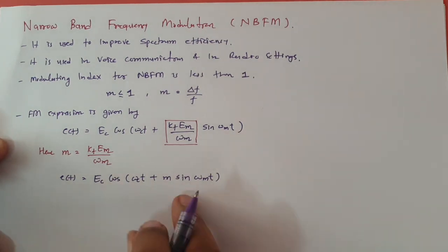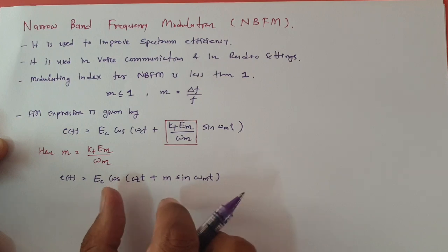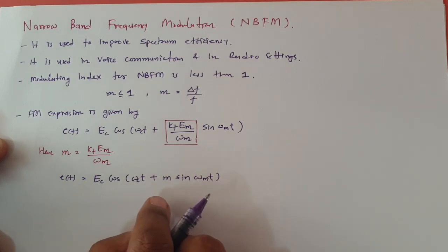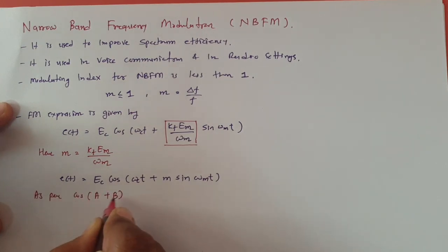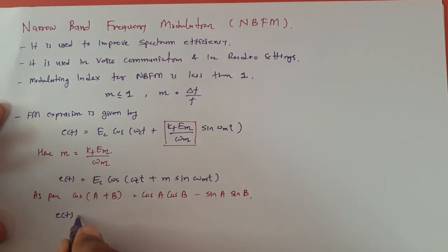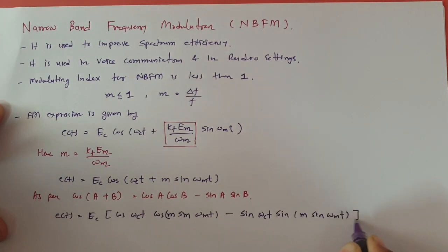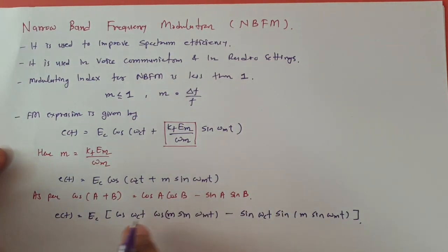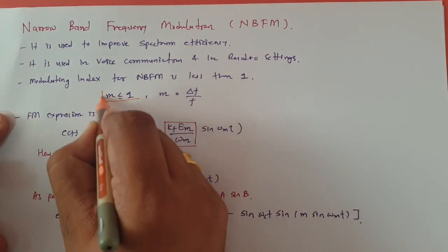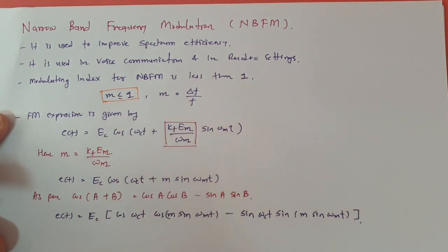Our basic agenda is to re-elaborate this equation. What we will be doing is rewriting this equation using the identity cos(A + B) = cos A cos B − sin A sin B. As per that, we will re-elaborate this, and the equation will change to E(t). Now, as we have seen, for narrowband frequency modulation the modulating index will be lower than 1, and usually if we consider M is very much less than 1, in that case we can re-simplify this equation.